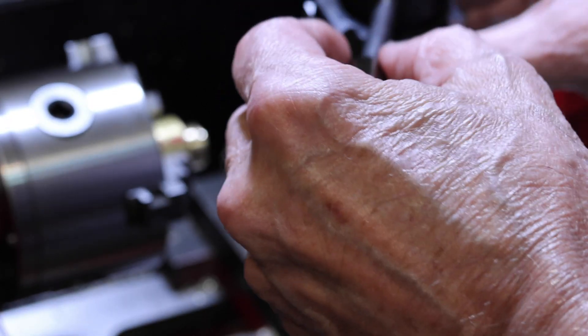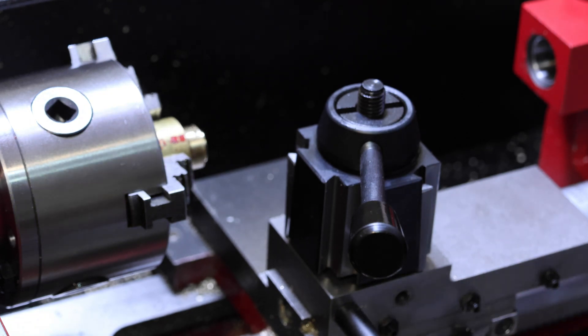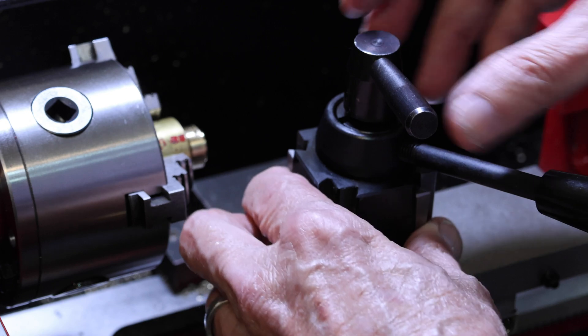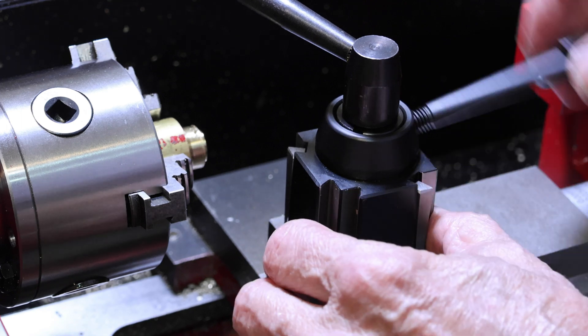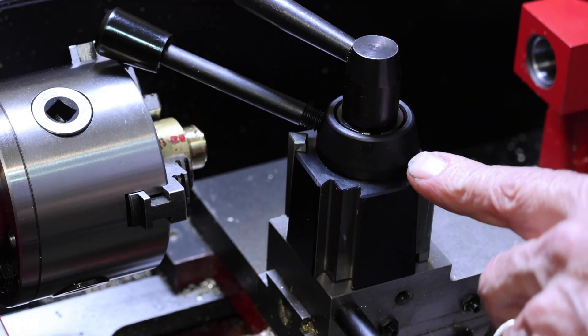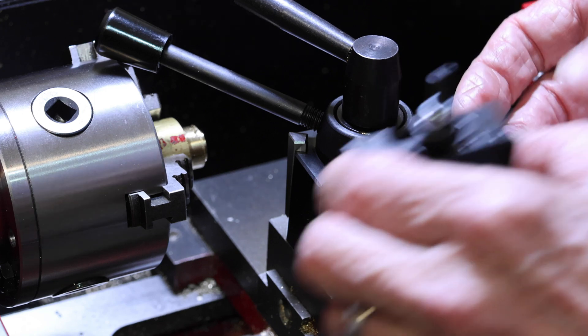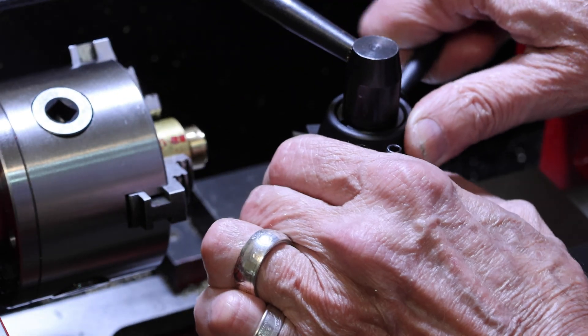Alright, so now we take our quick change tool post. Set it on here like so. And we'll use the lever from the old one. And that's pretty much all there is to it. We raise that up like so to be able to put in the tool holder. And then pull back this way to tighten it up.